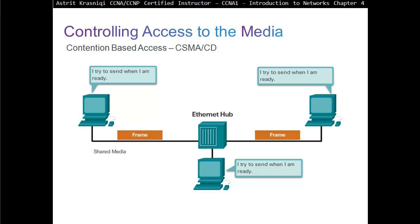Only one device can send at a time — it's half duplex communication. If two devices send at the same time, there will be a collision. When a collision happens, they will send a jamming signal, then run through a random backoff timer. Whoever reaches zero first will start listening again, check the carrier, make sure nobody is sending, and then start sending data.